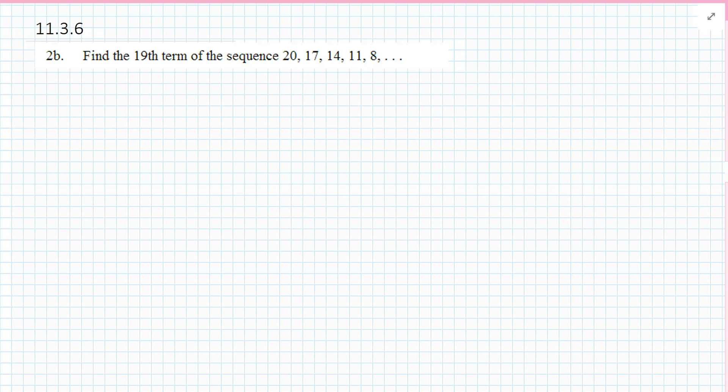2b. Find the 19th term of this sequence. What do you notice in this one? Well, this is not a geometric. This is a common difference. The difference between the second term and the first term, and the third term and the second term is negative 3. Our a1 value is 20. So now we're not going to use a geometric ratio. We're going to use the arithmetic ratio in explicit form.